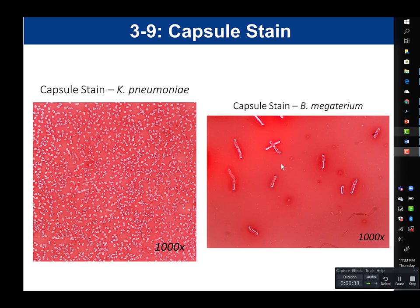B. megaterium are bacillus-shaped, so they are rod-shaped. In both slides, the background is stained red because of the Congo Red, which is a negative stain repelled by the cell. The cells themselves are stained with Saffranin — a basic dye carrying a positive charge, attracted to the cell — so the cells appear red. The clear part in both images is the capsule, visible around both Klebsiella pneumoniae and Bacillus megaterium. The capsule is colorless, not stained by either Congo Red or Saffranin.